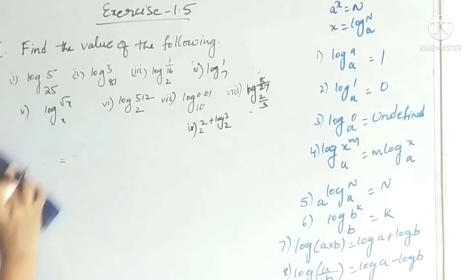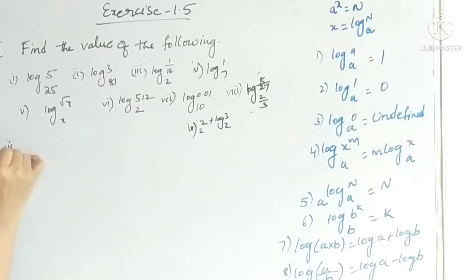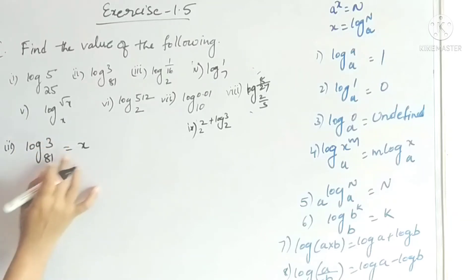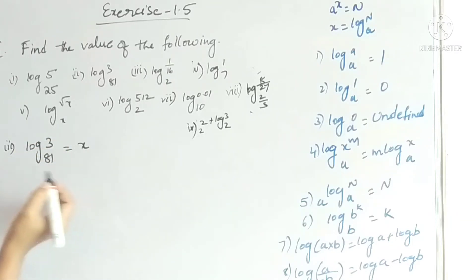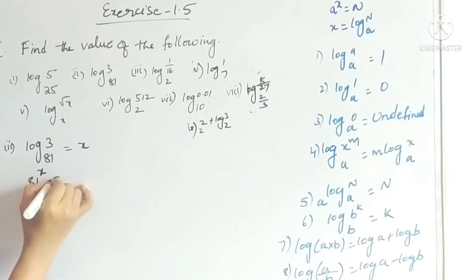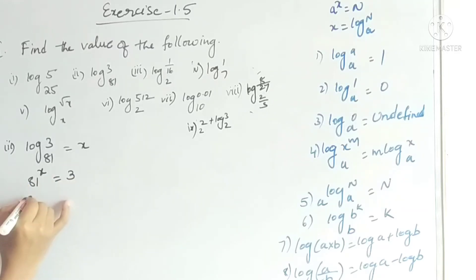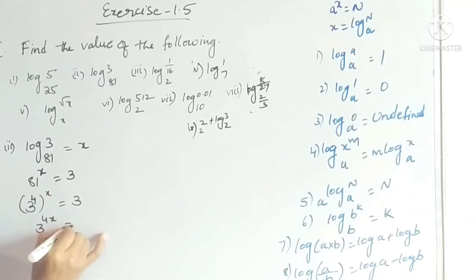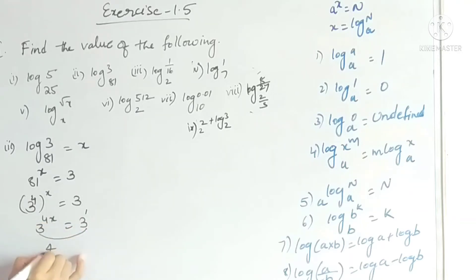The second problem is log 3 base 81. Let it be x. Exponential form: a to the power x equals n, so 81 to the power x equals 3. Writing 81 as 3 to the power 4, we get 3^4 whole power x equals 3^1. Since bases are equal, exponents are equal: 4x equals 1, so x equals 1/4.